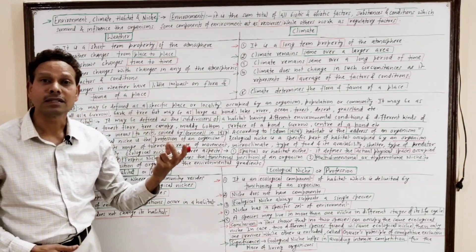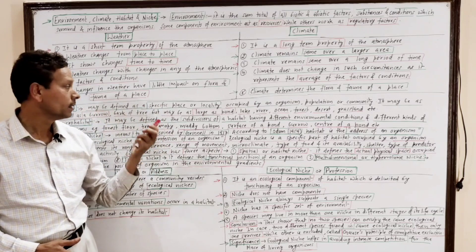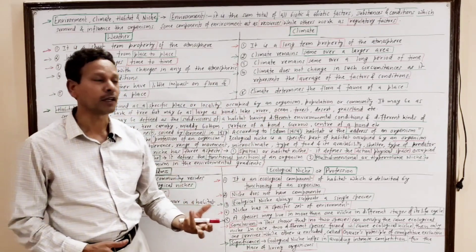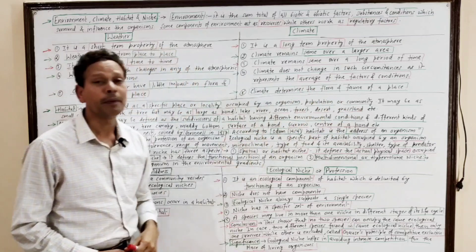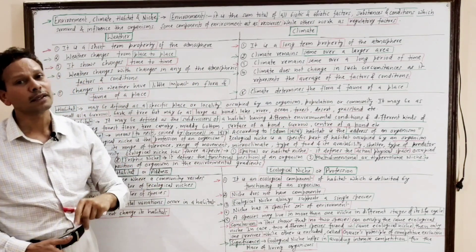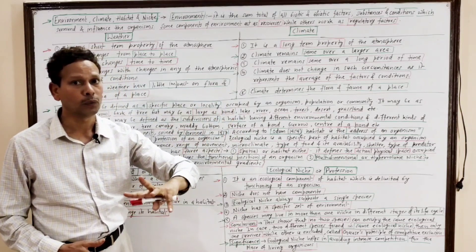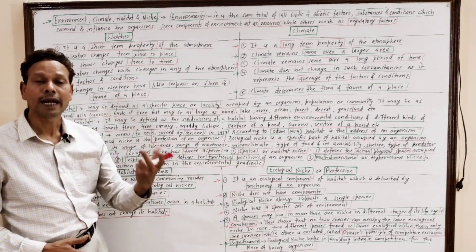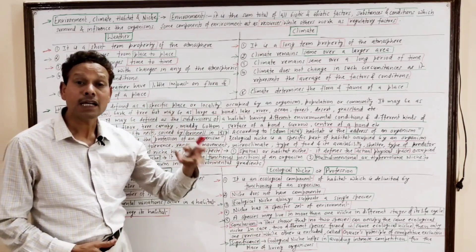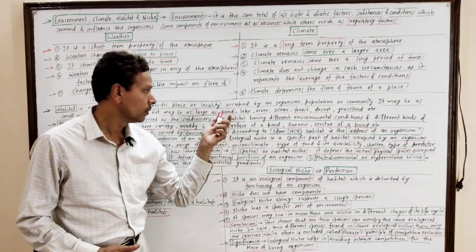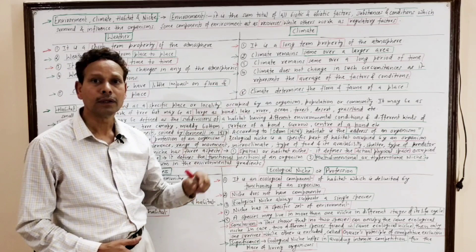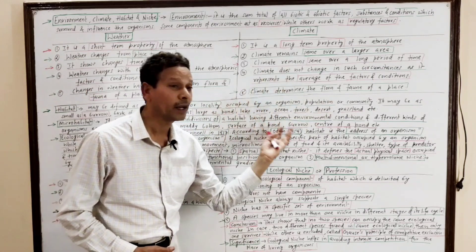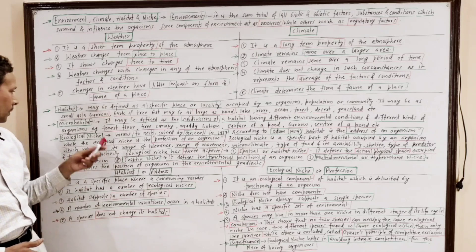Habitat may be defined as the specific place or locality occupied by an organism, a population, or a community. It may be as small as a burrow — like an earthworm's home — or the bark of a tree.